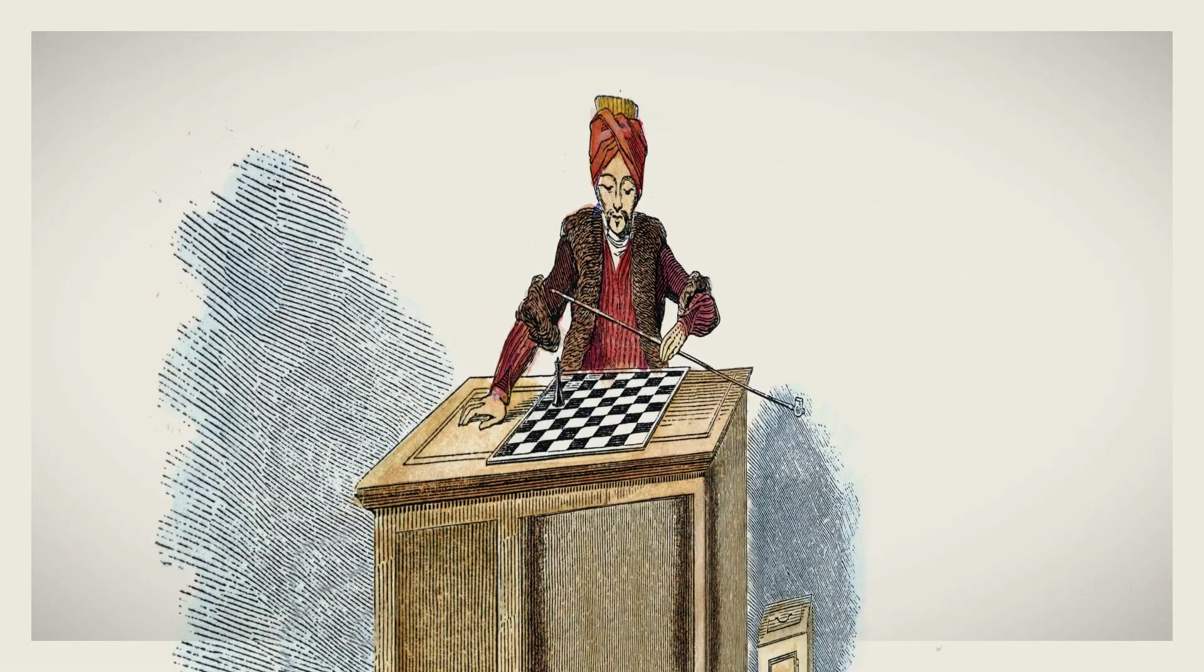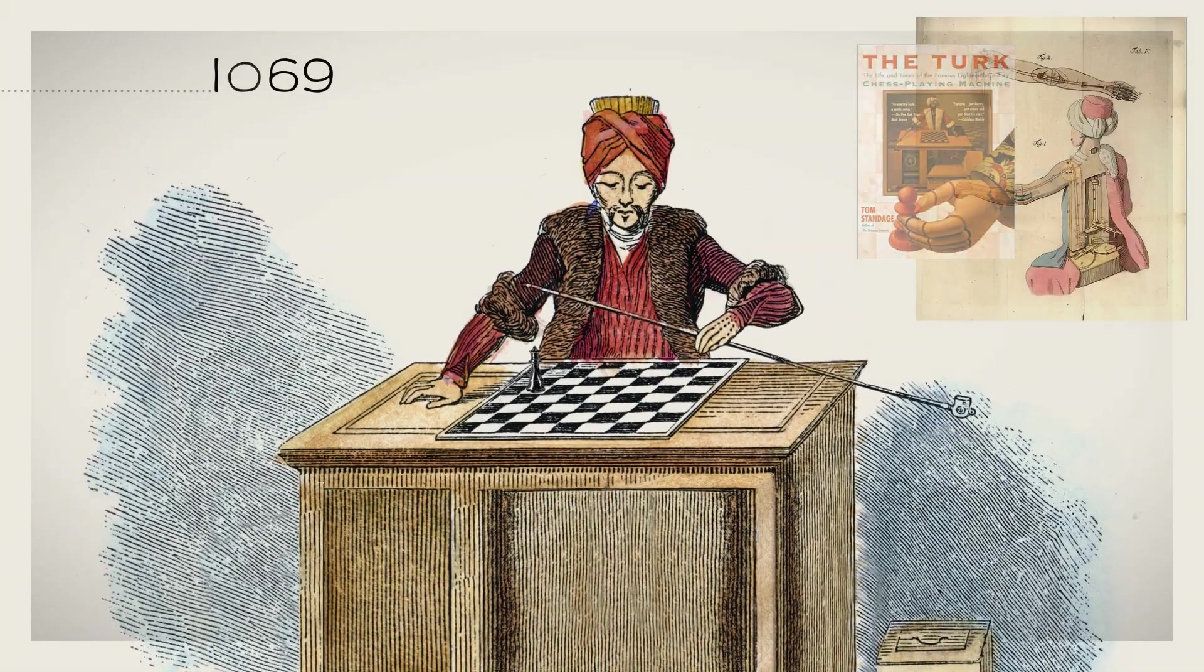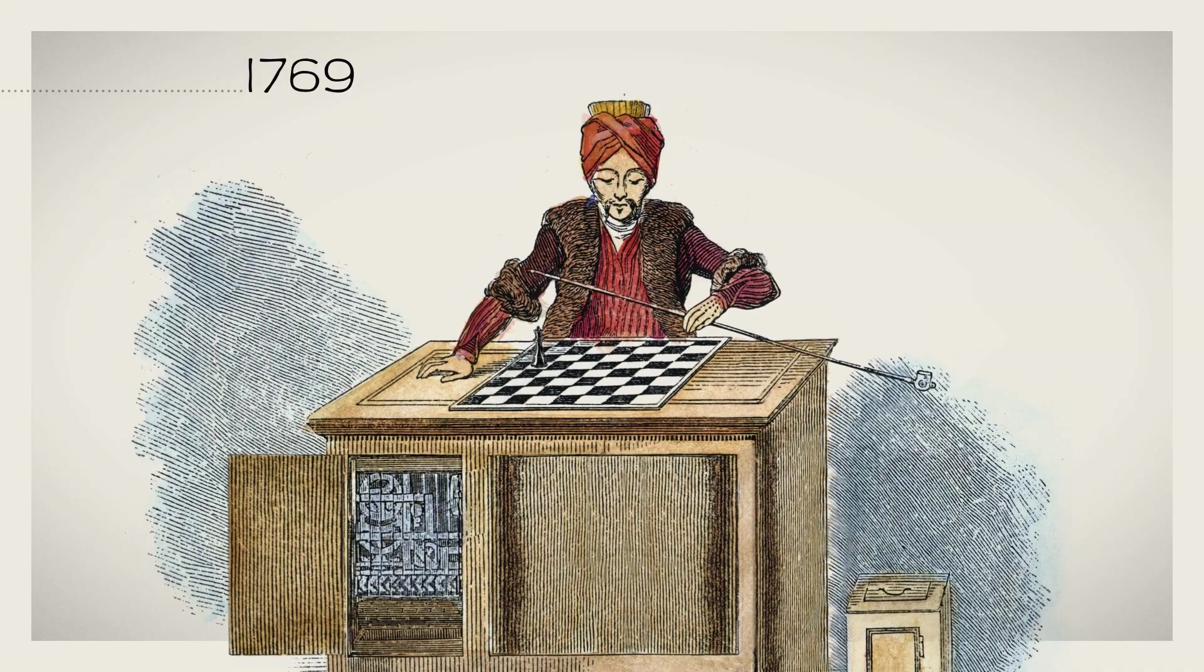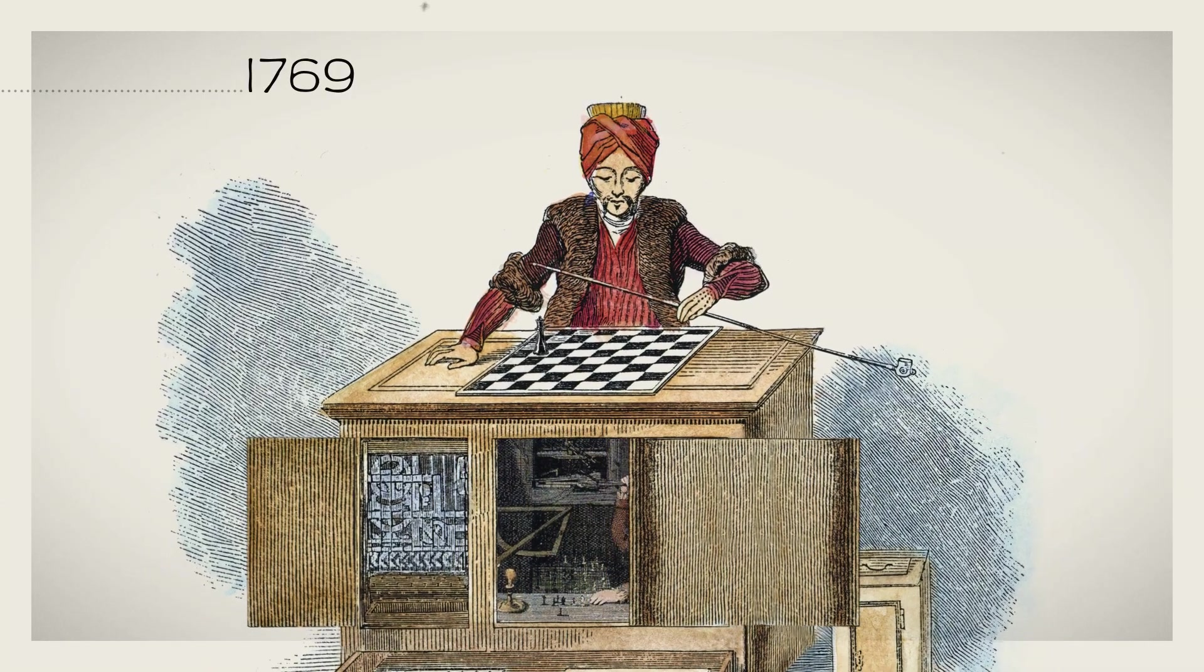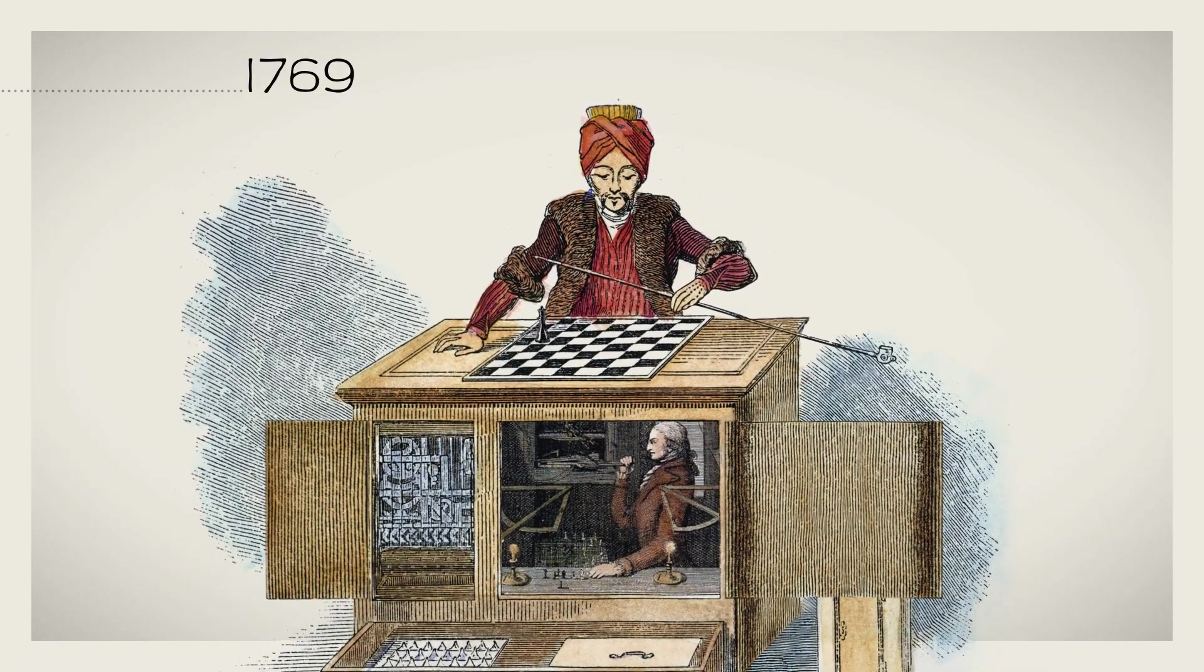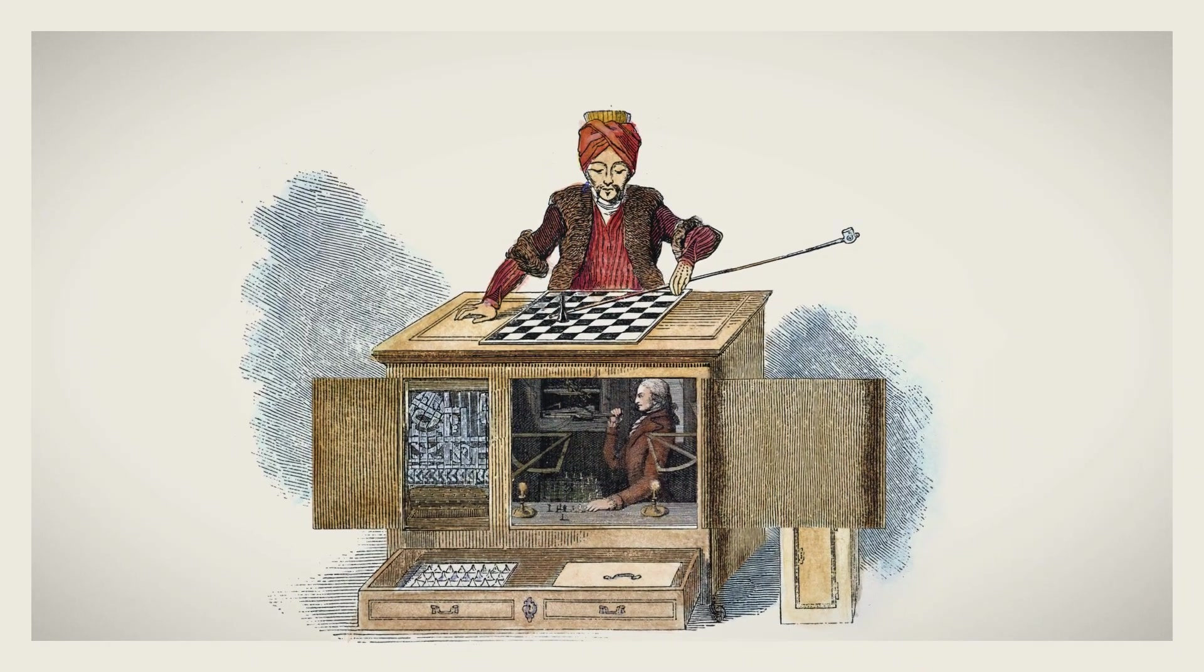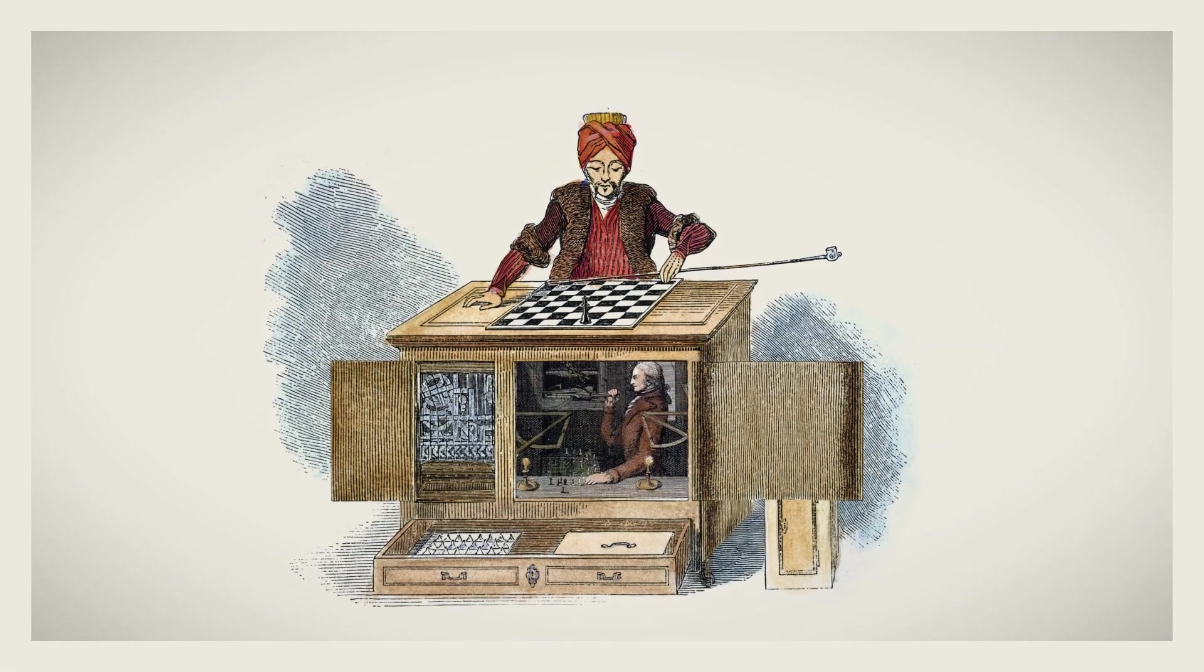What was claimed to be an automaton that could play chess, known as the Turk, was a machine created in 1769 and it could hide a short person inside. The person was positioned so that he could see the opponent's moves and respond by moving the mechanical arm of a dummy that looked like a Middle Eastern man.